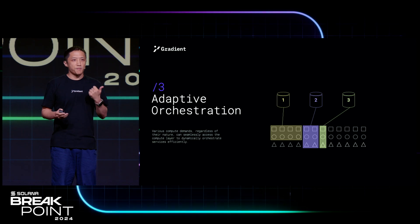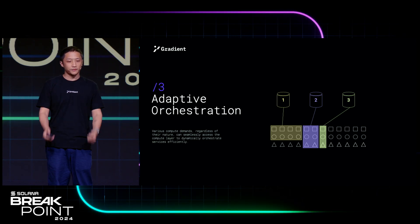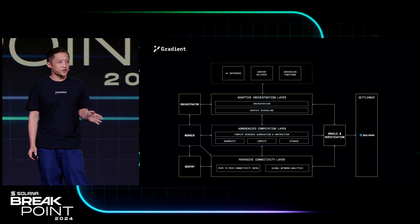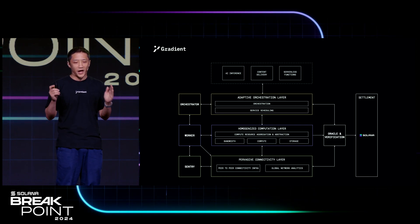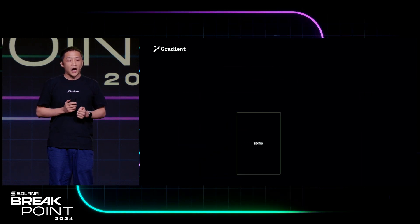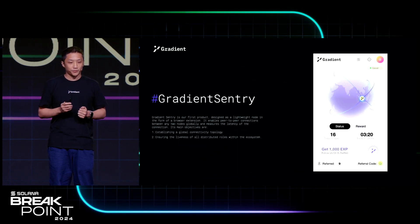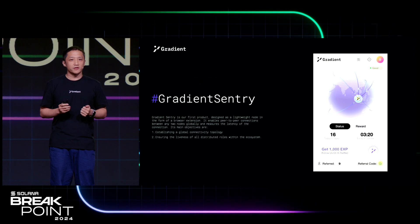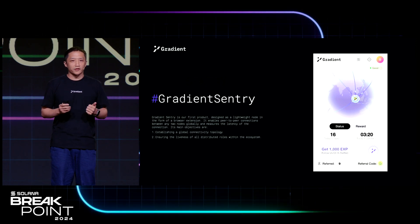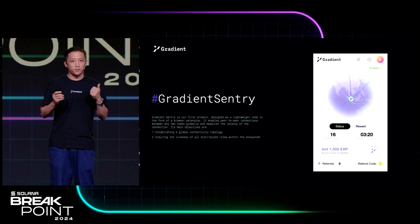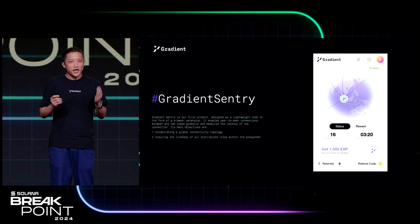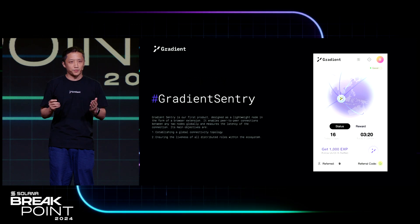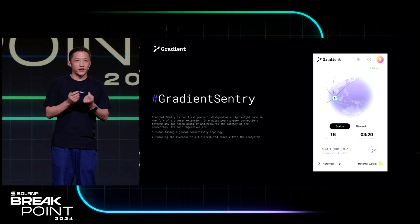Those are the three main building blocks of our project. Here is a bird's-eye view of all the building blocks and products we'll be having in the future. But for today, I will be focusing on the Sentry Node. Sentry Node is our first product — a lightweight client in the form of a browser extension. It can enable a peer-to-peer connection between two arbitrary nodes in the world and measure the latency between them.